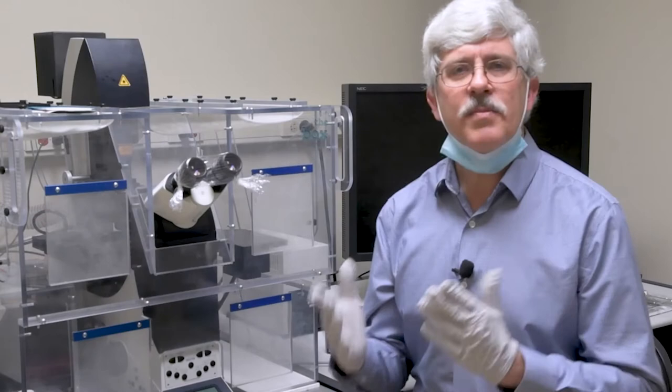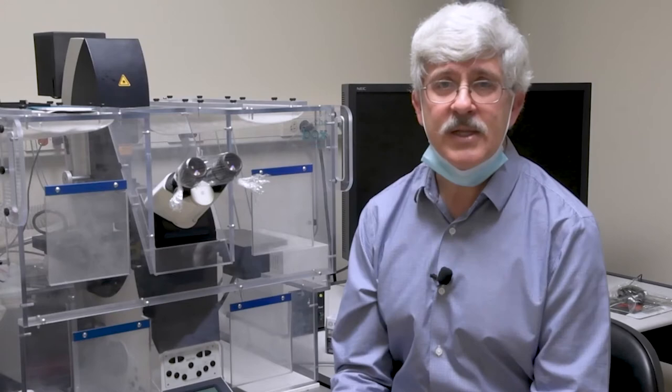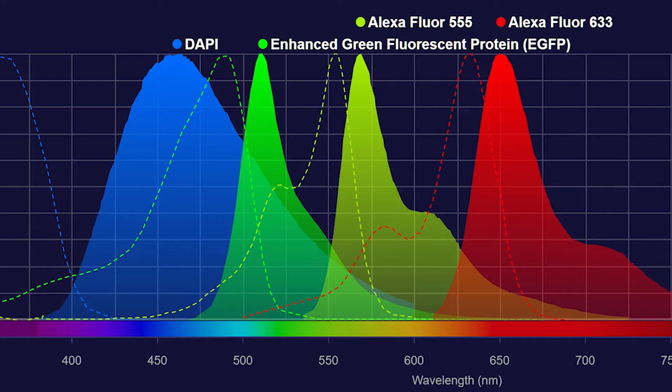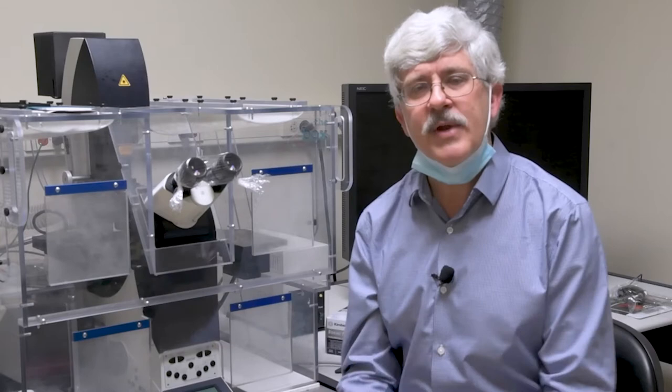Before we get started, it's a good idea to review why you might want to use the confocal microscope in the first place. The confocal is a more complicated instrument and requires more investment in time and money, so you want to make sure you're using it for the right reasons. One good reason is its spectral capabilities. If you have two fluorophores that are particularly close together with overlap or bleed through, this is a great system to keep them separated.